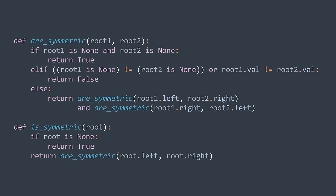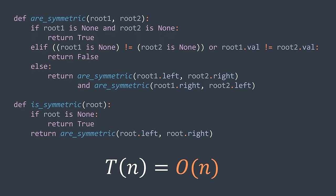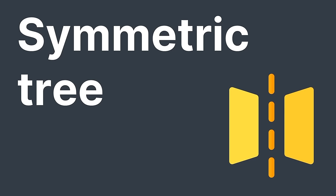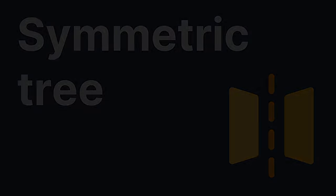For the time complexity, we're performing a depth first search traversal of the input tree, and DFS costs O(n) where n is the number of nodes. For space complexity, a symmetric tree has to be balanced, and the call stack size needed by a recursive function traversing a balanced binary tree is O(log n) — we get O(log n) space complexity. See you in the next lecture.